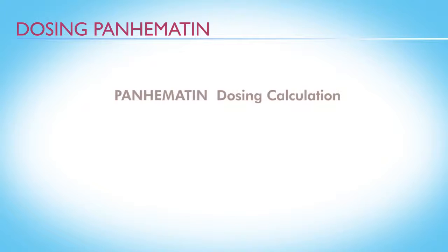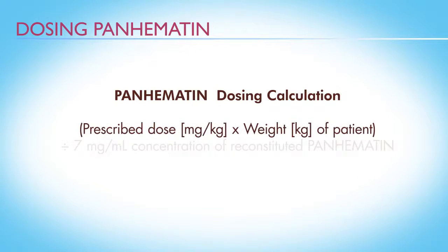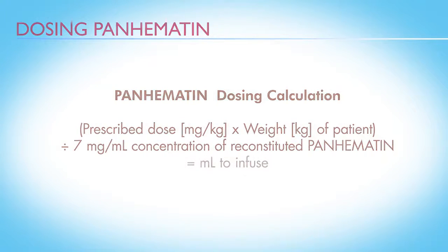To calculate the amount of reconstituted Panhematin the patient should receive, multiply the prescribed dose in mg per kg by the patient's weight in kg, then divide by 7 mg per milliliter, the concentration of reconstituted Panhematin.